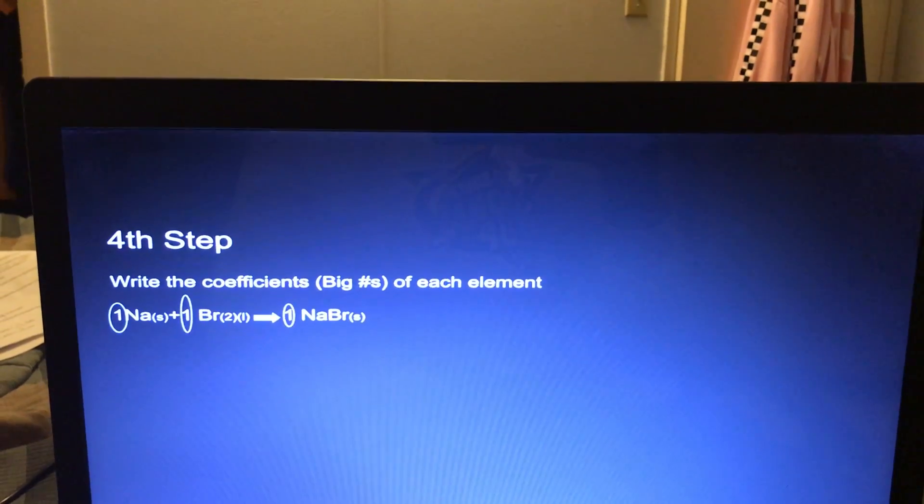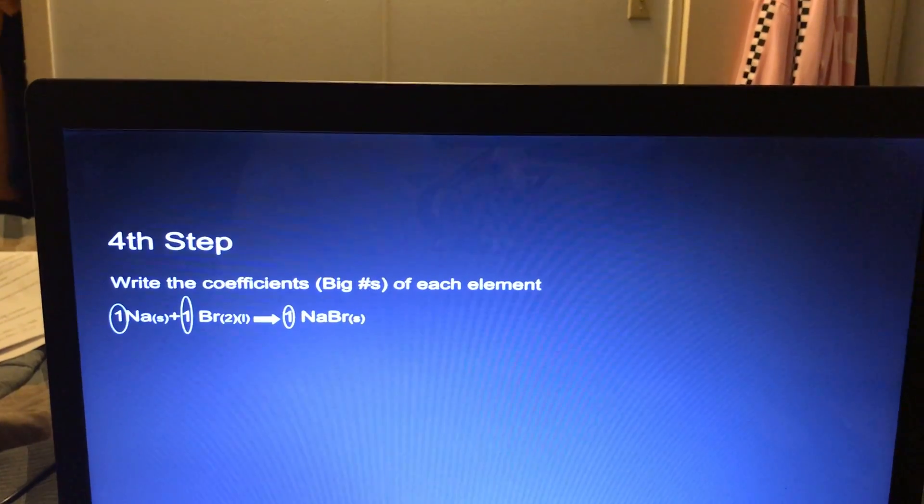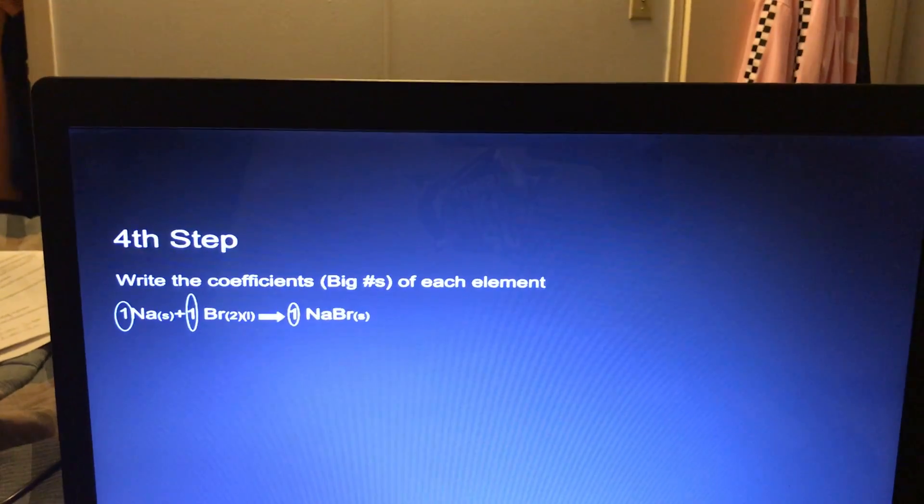The fourth step, you'd write the coefficients of each element, one for Na, one for Br, and one for NaBr.